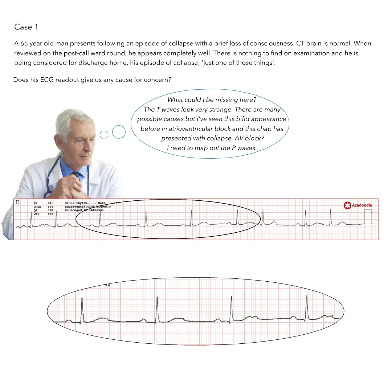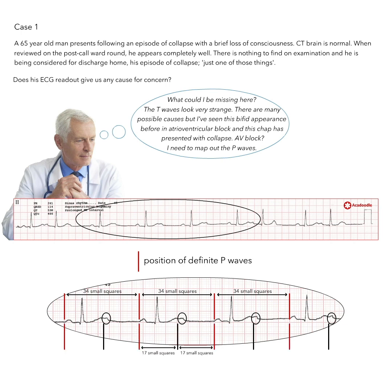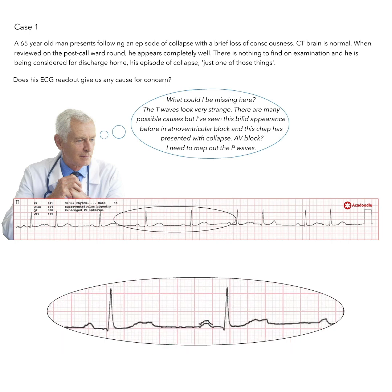If we map out the identifiable P-waves, we find that these distortions of the T-waves occur almost exactly at the halfway point between identifiable P-waves. Both the axis and partially imagined morphology of these deflections sits well with the contention that they are non-conducted P-waves.